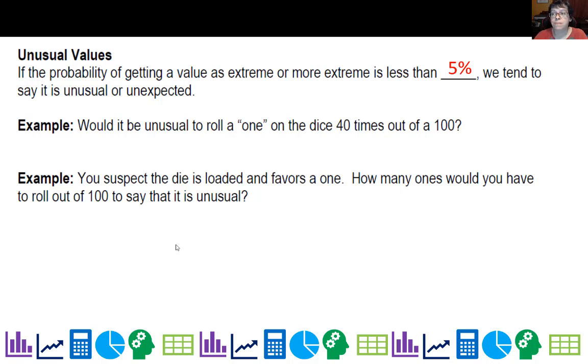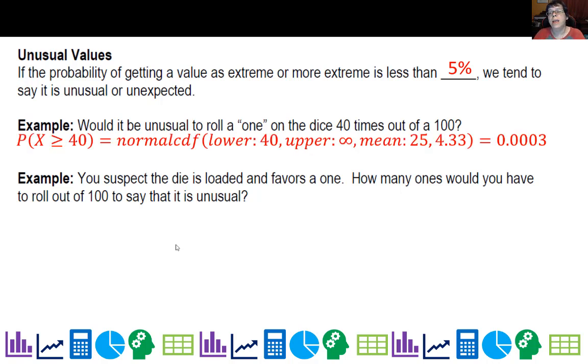Would it be unusual to roll a one 40 times out of 100? We'll look at 40 or more. Using normal CDF with lower 40, upper infinity, mean 25, and standard deviation 4.33, we get 0.0003, which is very unusual.